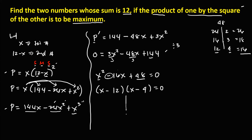We equate each factor to zero: x minus 12 equals 0 gives x equals 12, and x minus 4 equals 0 gives x equals 4.